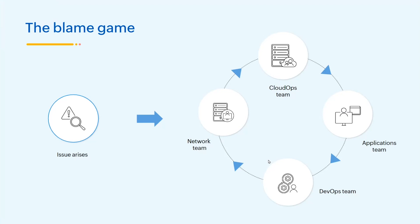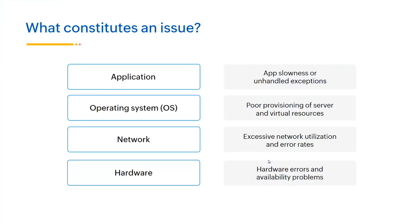How do you actually tackle this challenge? You can tackle it by understanding where exactly the issue emerges from and what exactly constitutes an issue. You have several components with respect to your infrastructure: the hardware component, which may be prone to hardware errors and availability problems; the network component, which might perform poorly due to excessive network utilization and error rates; the operating system, where poor provisioning of server and virtual resources causes issues; and the application, where any slowness or unhandled exceptions might cause disruptions. You need to thoroughly understand what key metrics to track in order to pinpoint and resolve these issues.